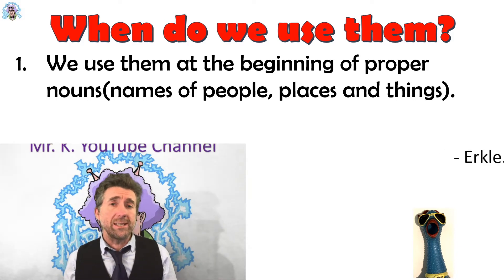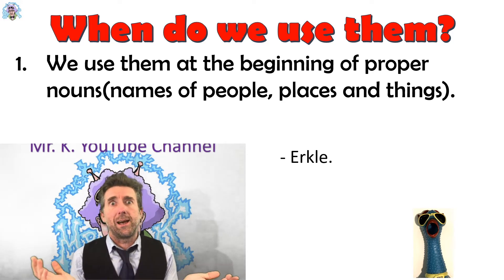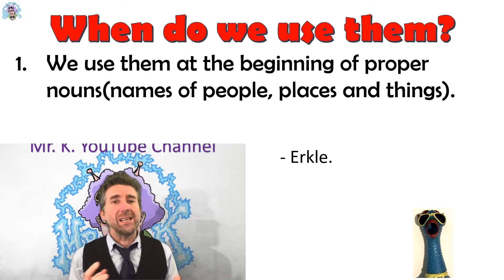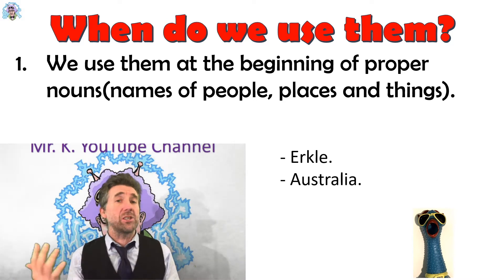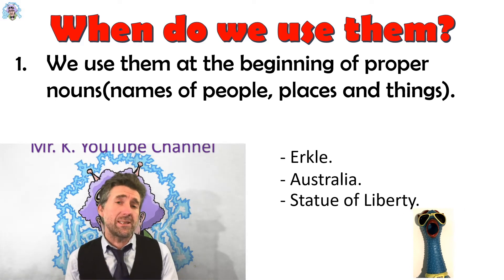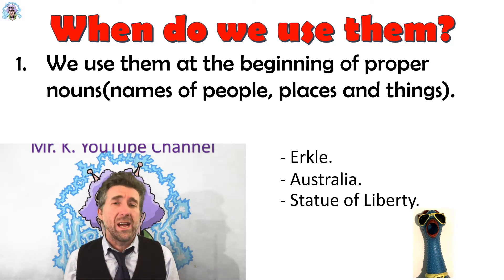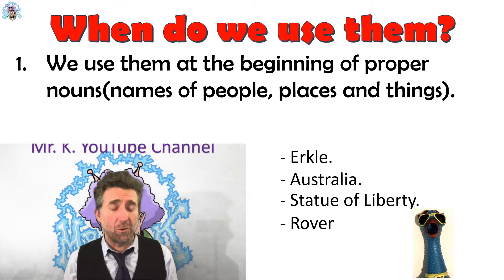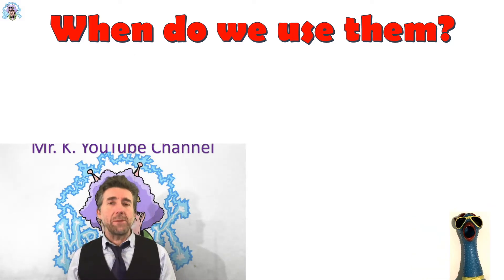So let's get some examples up on the board. Example number one is Urkel — my pet chicken, my pet blue chicken that squawks like a duck. Urkel is the name of a pet and it has to start with a capital. Another one: Australia — a place — starts with a capital A. Statue of Liberty, it's a thing in the United States and it's a name of something, so it starts with a capital. And the name of my dog, Rover, starts with a capital. And name of a company, Apple Computer.